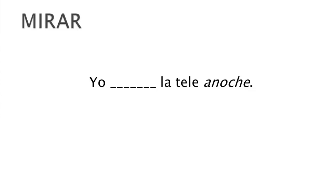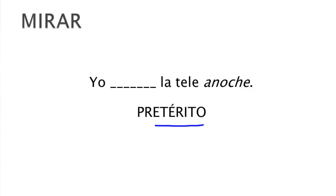Let's try a couple here. Mirar — to watch. If you want to say 'I watched la tele anoche,' are you going to use the preterite or the imperfect? Well, anoche is a specific moment — last night I watched TV — so we would use the preterite. The conjugation, yo form of mirar: mire. Yo miré la tele anoche.